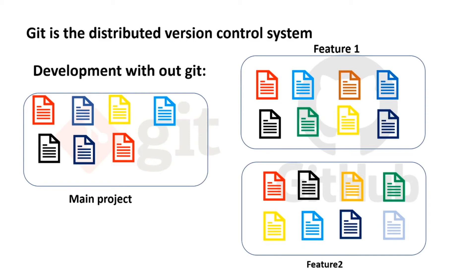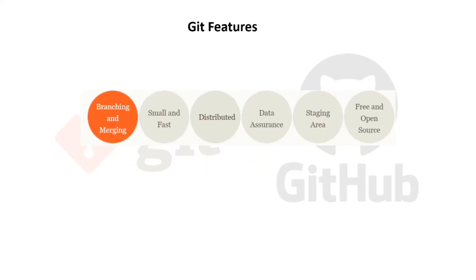So let's move to Git features. The first feature is branching and merging — it's very easy in Git to create a branch and merge those branches into another branch. The second one is small and fast — Git is very lightweight and fast. Whatever operations you perform in Git are very fast compared to other version control systems. Third, it's distributed — a remote repository exists and each developer has their local copy, and at the end they can collaborate their code to the remote repository.